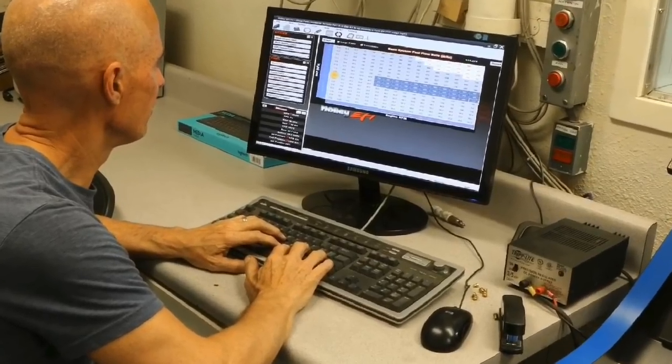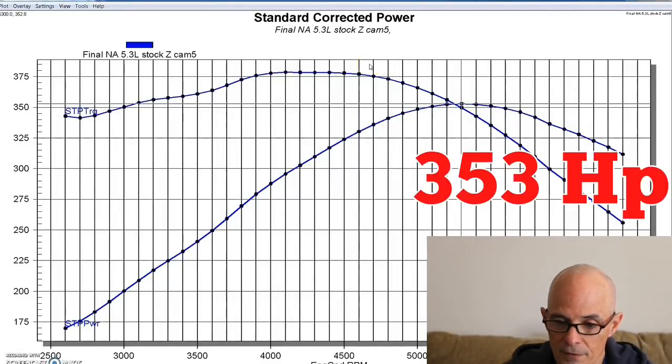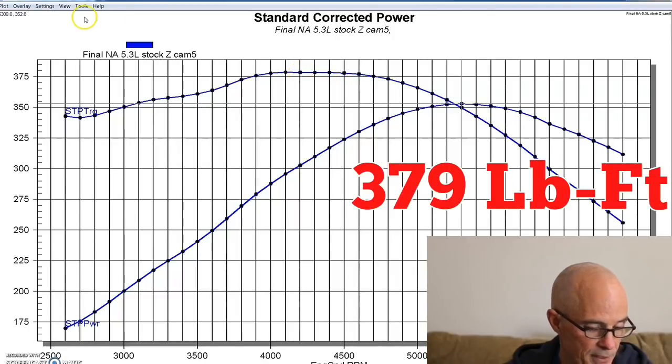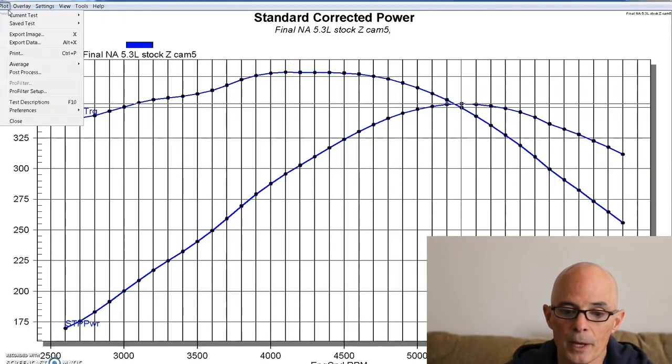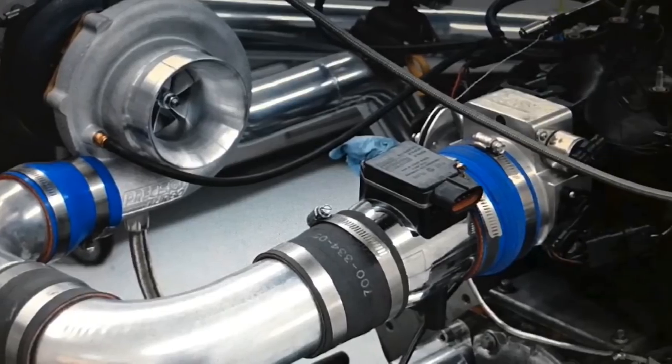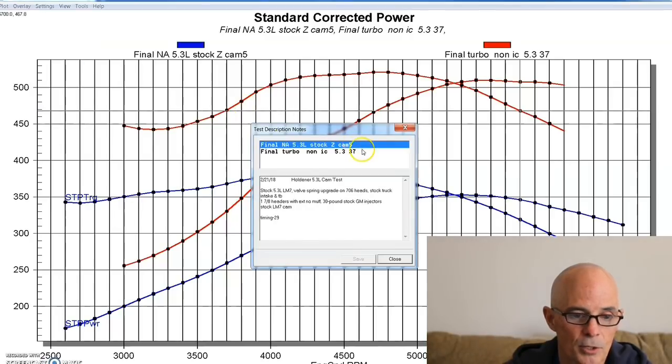We run it the way that we always did with headers and a Mazira electric water pump, a Holley HP management system with no accessories on it. So it made 353 horsepower and 379 foot-pounds of torque when we ran it NA. Then we added our single turbo kit, real custom job with no intercooler.